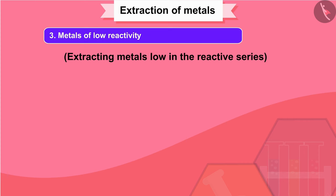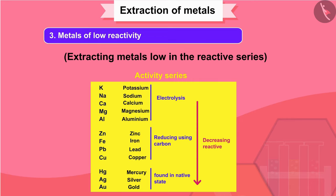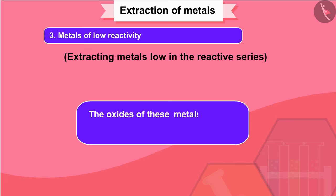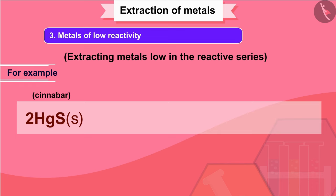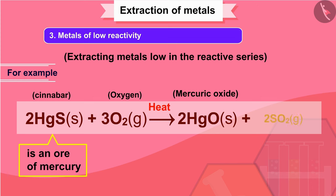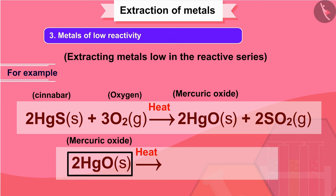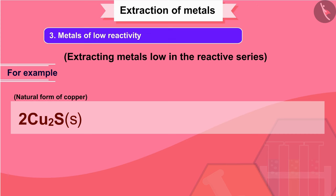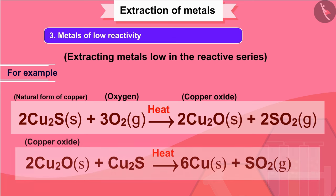Extracting metals low in the reactivity series: metals low in the activity series are very unreactive. The oxides of these metals can be reduced to metals by heating alone. For example, cinnabar (HgS) is an ore of mercury. When it is heated in air, it is first converted into mercuric oxide (HgO), which is then reduced to mercury on further heating. Similarly, copper, which is found as Cu₂S in nature, can be obtained from its ore by just heating in air.